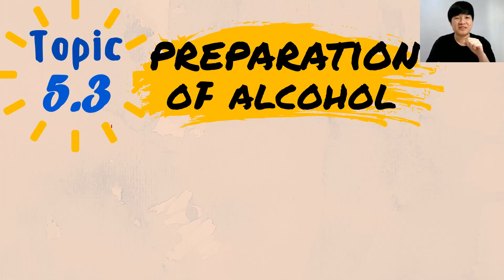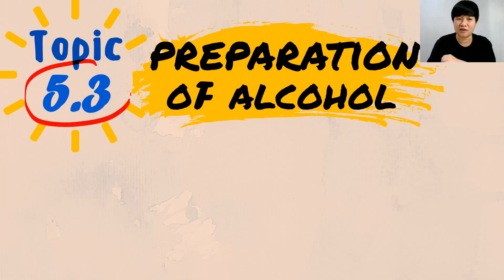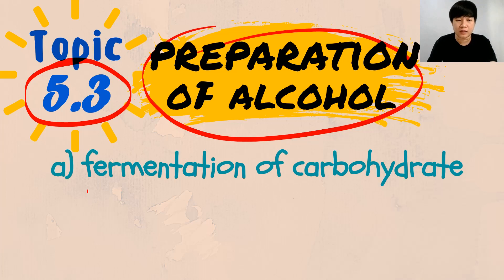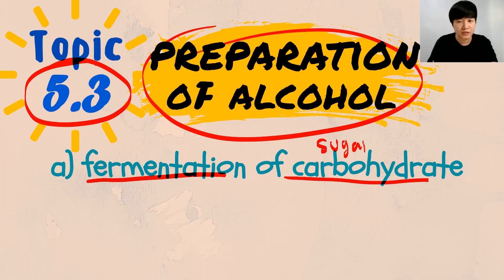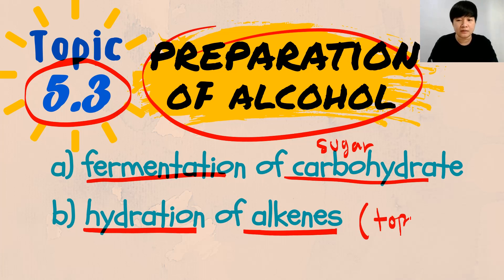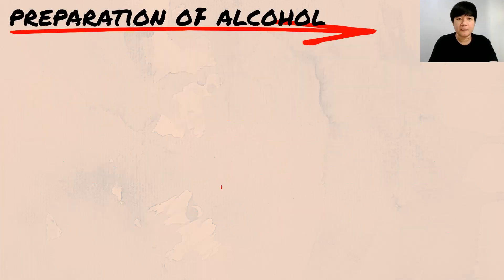Welcome back. Today we talk about topic 5.3: preparation of alcohol. It's a very short video because it's extremely simple — something you have learned before. We have two methods of preparing alcohol: the first one is the fermentation of carbohydrate (or sugar), and the second one is the hydration of alkenes, which you learned in the alkenes topic 3.